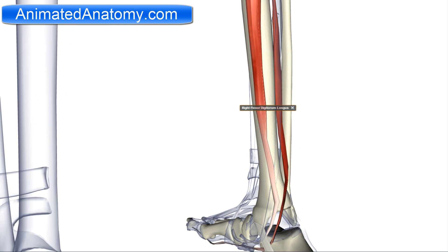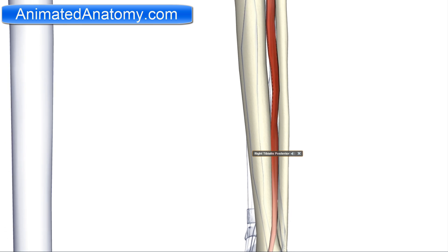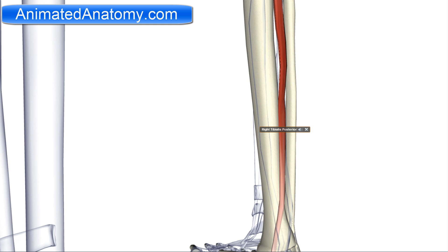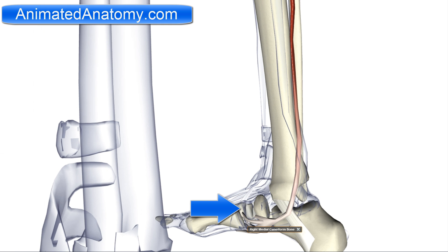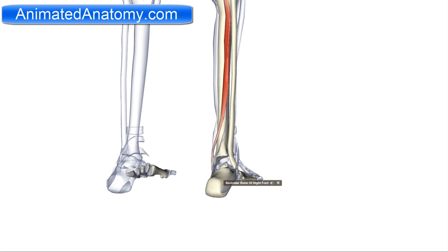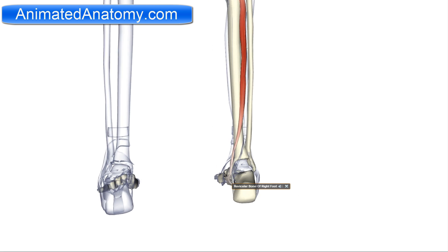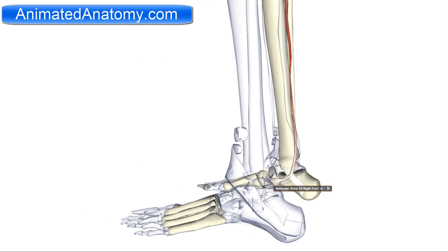Now I will deactivate these two muscles and explain the last muscle that goes through the tarsal tunnel — the tibialis posterior. The tibialis posterior has the origin on both the tibia and fibula. The insertion is on the medial cuneiform and also on the navicular bone. It is innervated by the tibial nerve and has the function of inversion of the foot and plantar flexion of the foot.